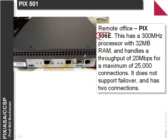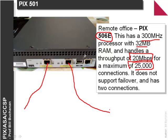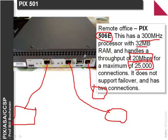The level above this is the PIX 506E. It has a faster processor, more memory, and can support a throughput of about 20Mbps with about 25,000 lines. In this case we have Ethernet 0 which is outside and Ethernet 1 which is inside — untrusted and trusted respectively. We have the console port to connect a terminal for configuration. There is no failover at all and it only has two connections.